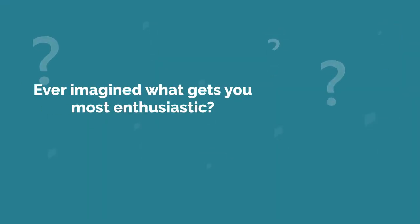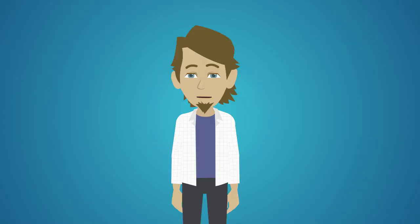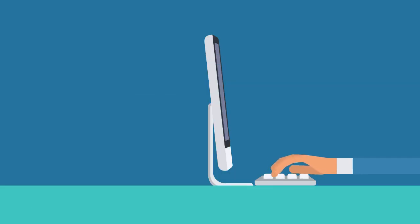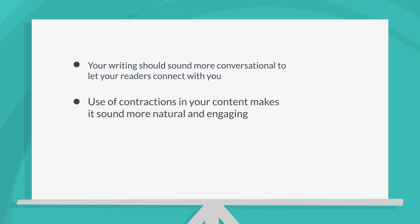Ever imagined what gets you most enthusiastic? It's when you talk to your friends. The first and most important tip to create a viral blog post is to write like you talk to someone. Your writing should sound more conversational to let your readers connect with you.